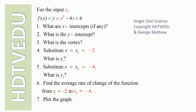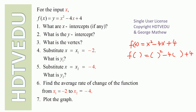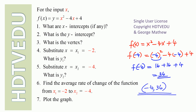Question five: what is y when x equals negative 4? f(x) equals x squared minus 4x plus 4. Substituting x equals negative 4: f(negative 4) equals negative 4 to the power of 2, which is 16, minus 4 times negative 4, which is positive 16, plus 4. That equals 36. So (negative 4, 36) is a point on the graph, giving us x₂, y₂ equals (negative 4, 36).